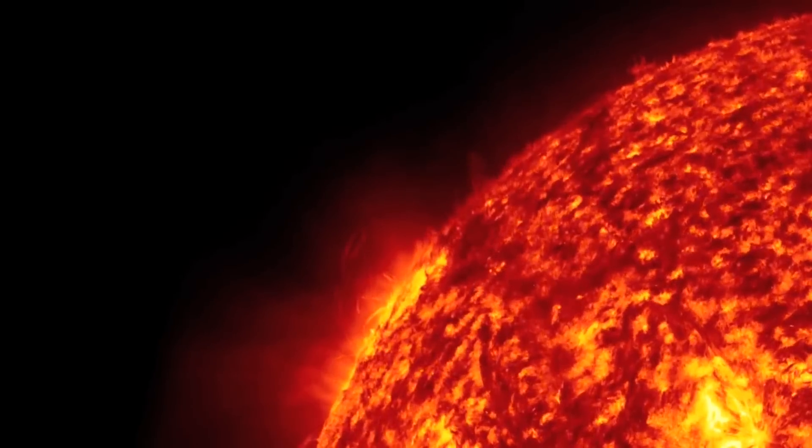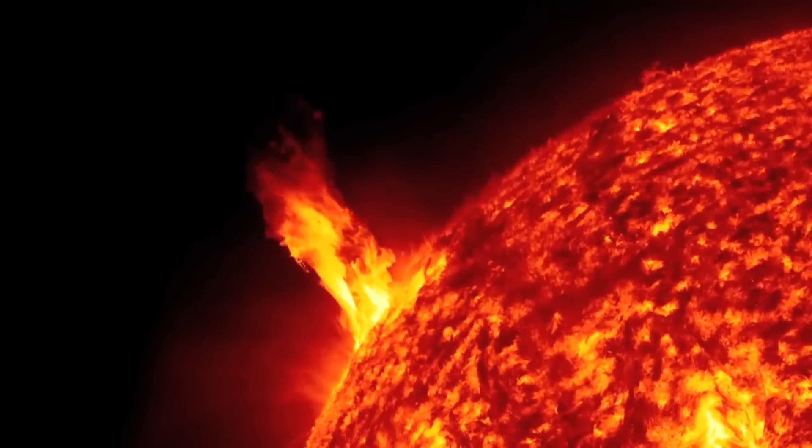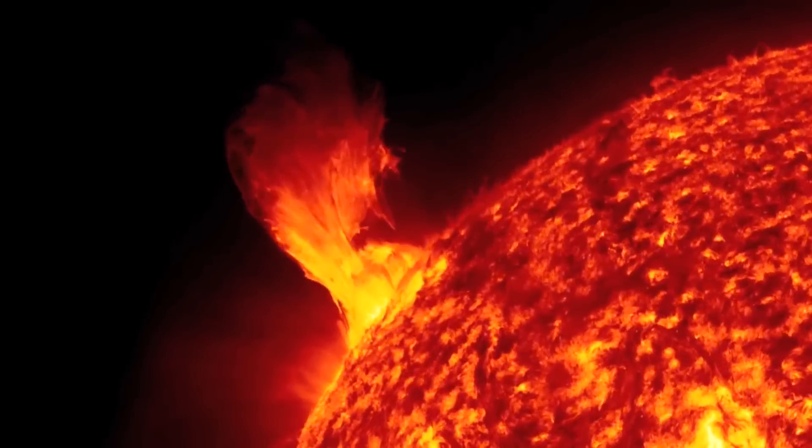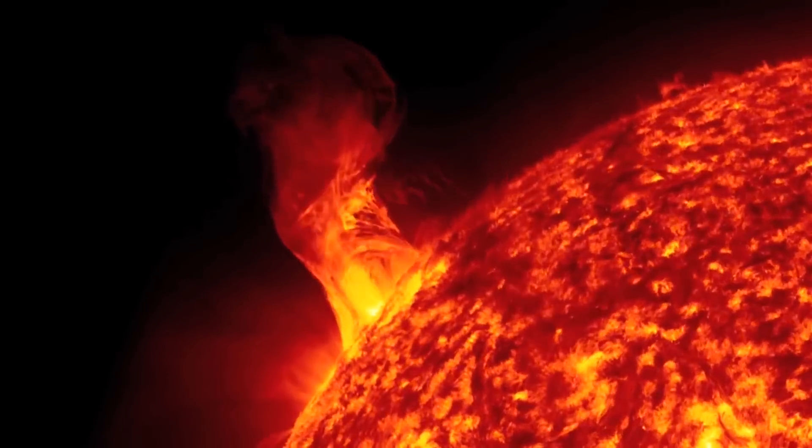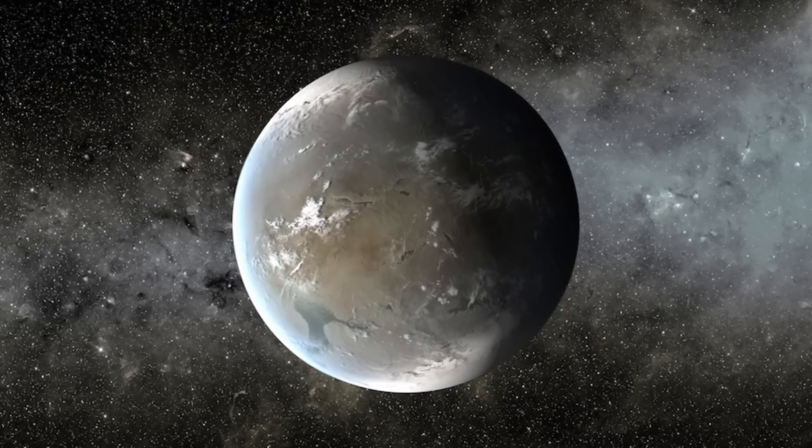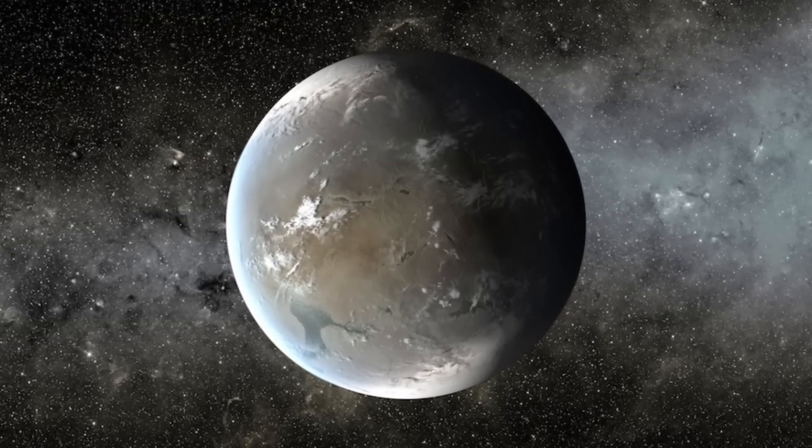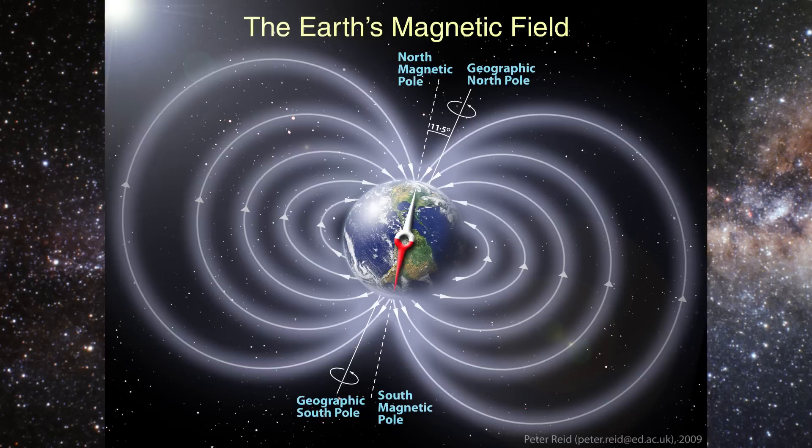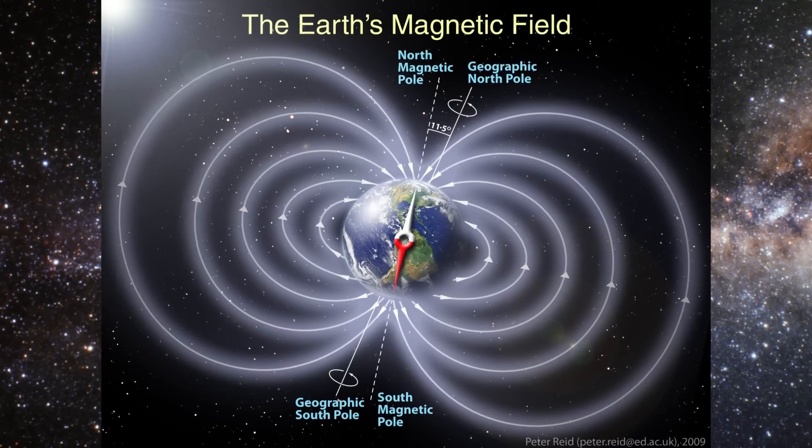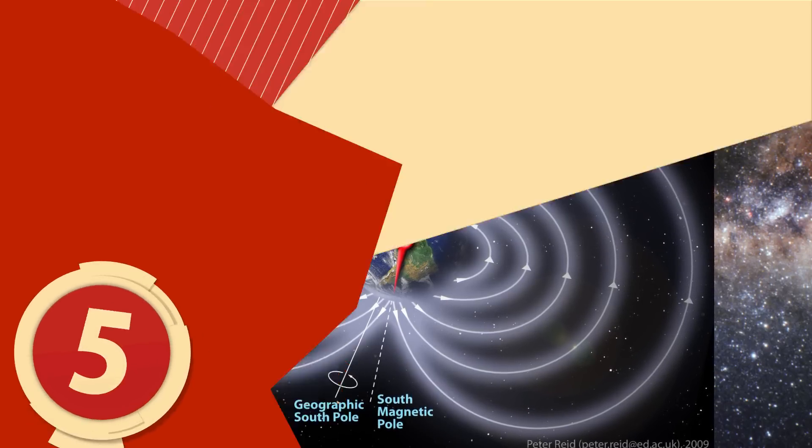The planet's nearby star emits flares 10 times more powerful than the Sun, leading to the possibility of a stripped atmosphere. There's still hope that Kepler-438b, which is 12% larger and receives 40% more light than Earth, may be usable if it has a magnetic field like our own.